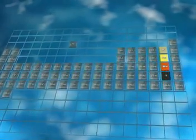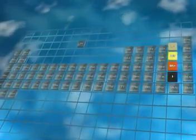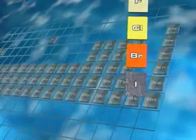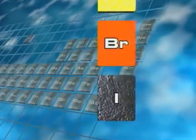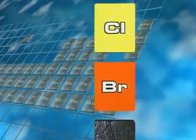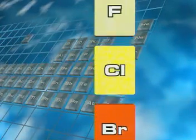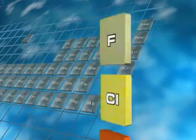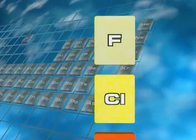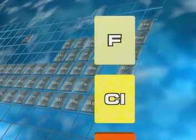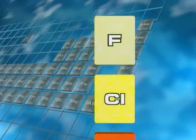Group 7 of the periodic table is a group of non-metallic elements called the halogens. Iodine, bromine, chlorine and fluorine are very reactive, so they're not found as free elements in nature.